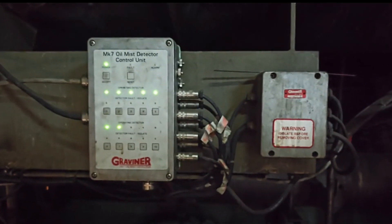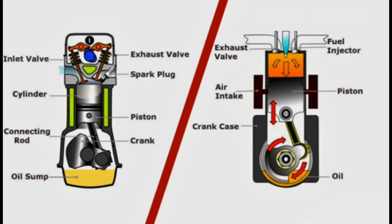In crankcase, oil mist is created when the lubricating oil is splashed by the moving and rotating parts of the engine. This oil mist reduces the flash point of the oil, allowing it to catch fire in presence of a hot spot.